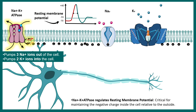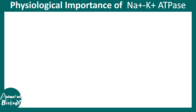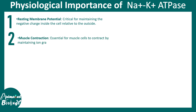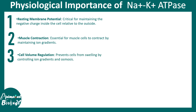Additionally, there are leak potassium channels that keep pumping potassium out. All these things together make the membrane potential very negative. Beyond maintaining the resting membrane potential, sodium potassium ATPase also helps in muscle contraction.